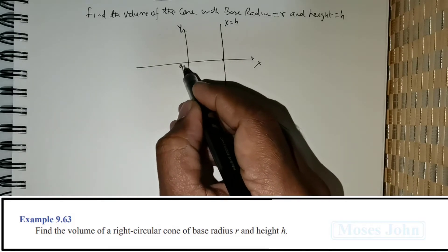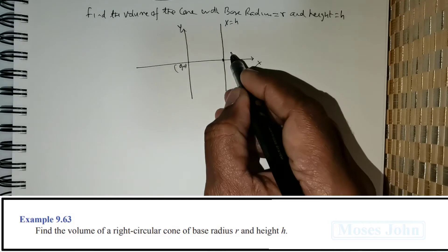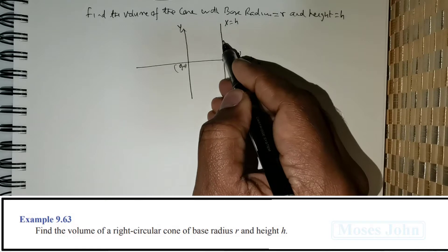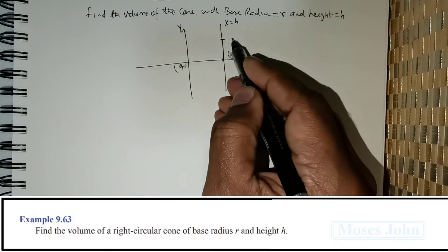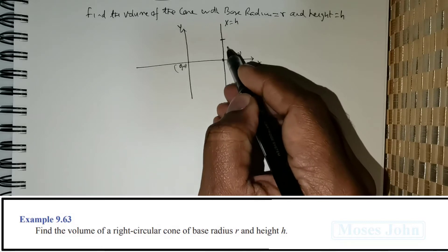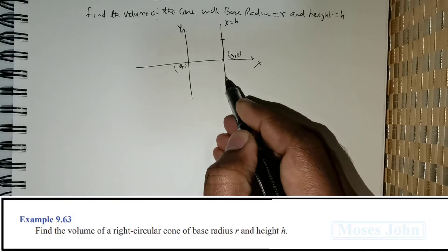Now, this point is 0, 0, and this point is going to be h, 0. Now, the base radius is given to be as r units. So we can add the r to be somewhere over here. So this can be the base radius.